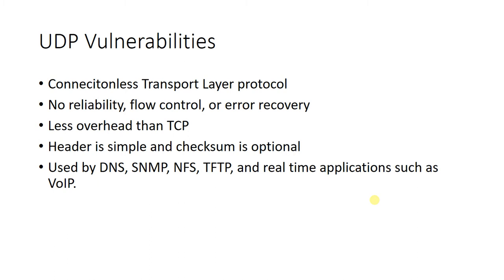Let's do a quick review of UDP before we talk about some of its vulnerabilities. UDP is a connectionless transport layer protocol. When we compare it to TCP, what we find is that UDP does not have any reliability, flow control, or error recovery mechanisms. Because of this, the fields we would see in a TCP header used for those features are not present in a UDP header. Therefore, we have less overhead than TCP.